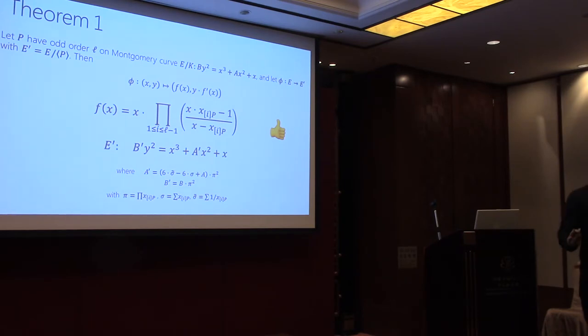If there was one slide that sums up the whole talk, this is the slide. Theorem one is the crux of the paper. If we've got a point P of odd order L on a Montgomery curve, then there's an isogeny that is very simple. It'll take the point (X,Y) on E to a point with these coordinates on E', where F(X) is just this product here, of X evaluated at terms that are determined by all of the L points in the kernel of P. The theorem also guarantees that the image curve is Montgomery, which is what we want. Computationally, it's already a lot more simple than Velu's formulas out of the textbook.